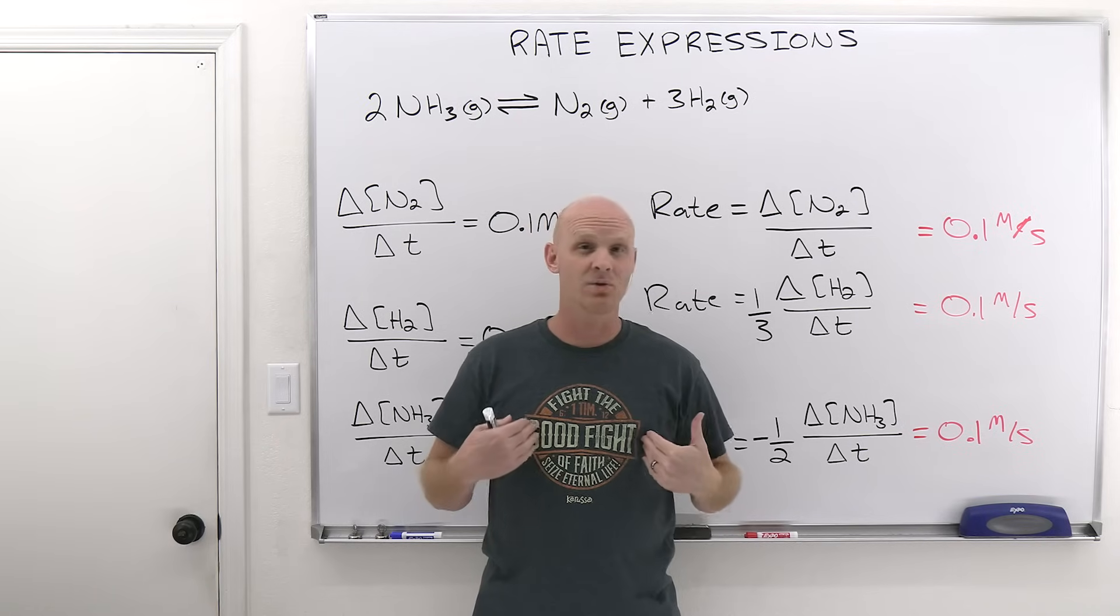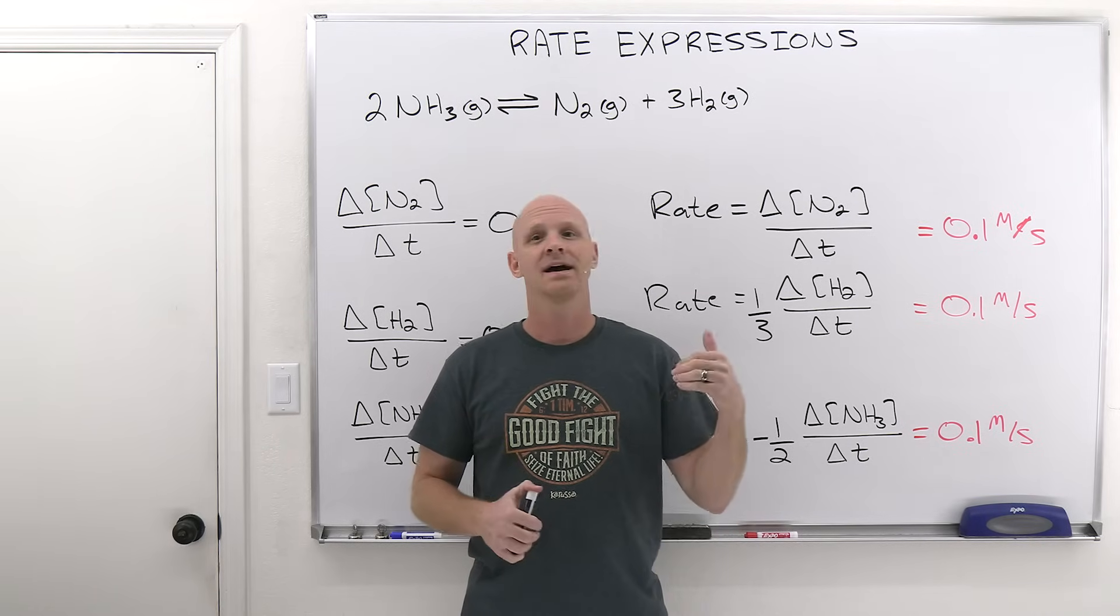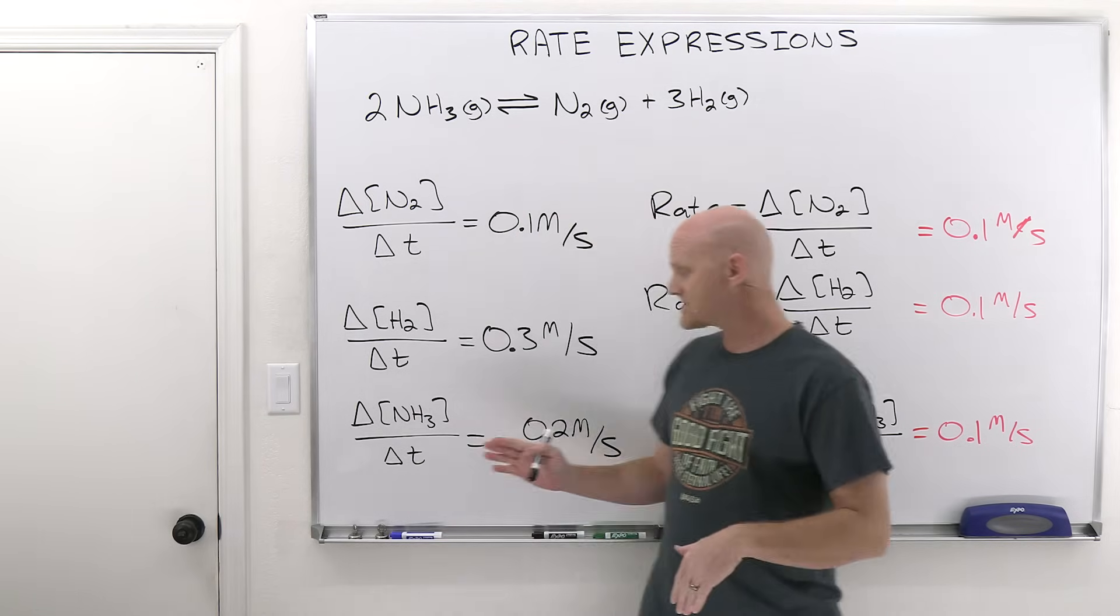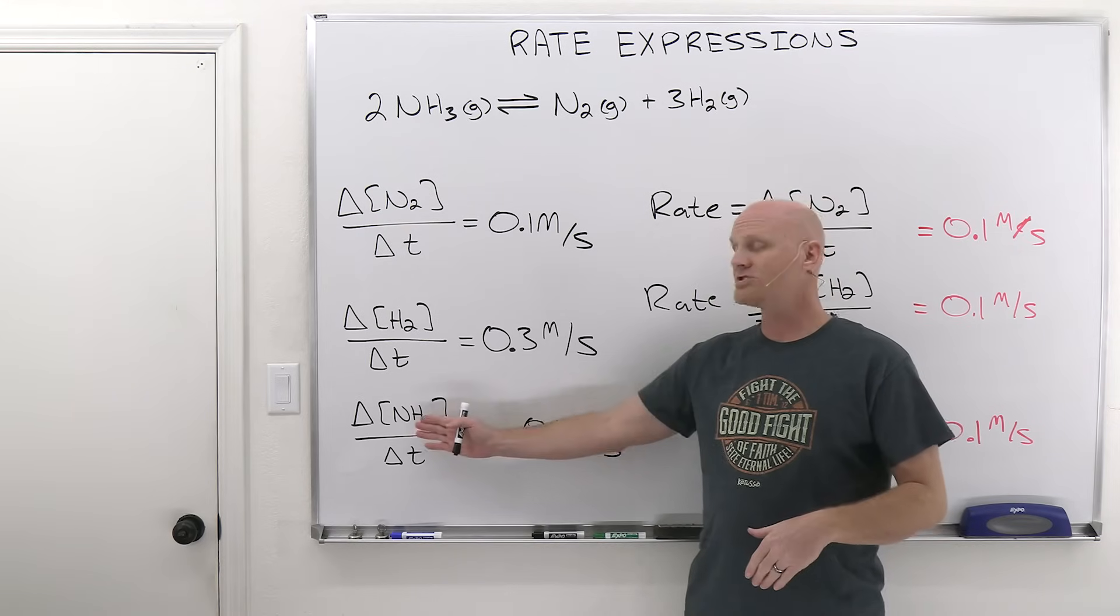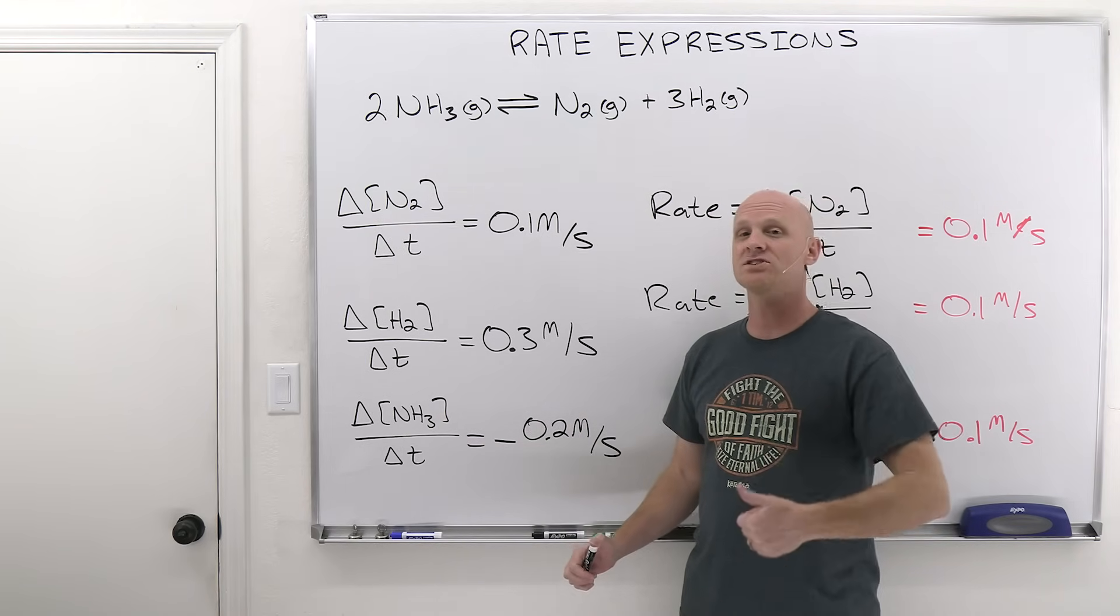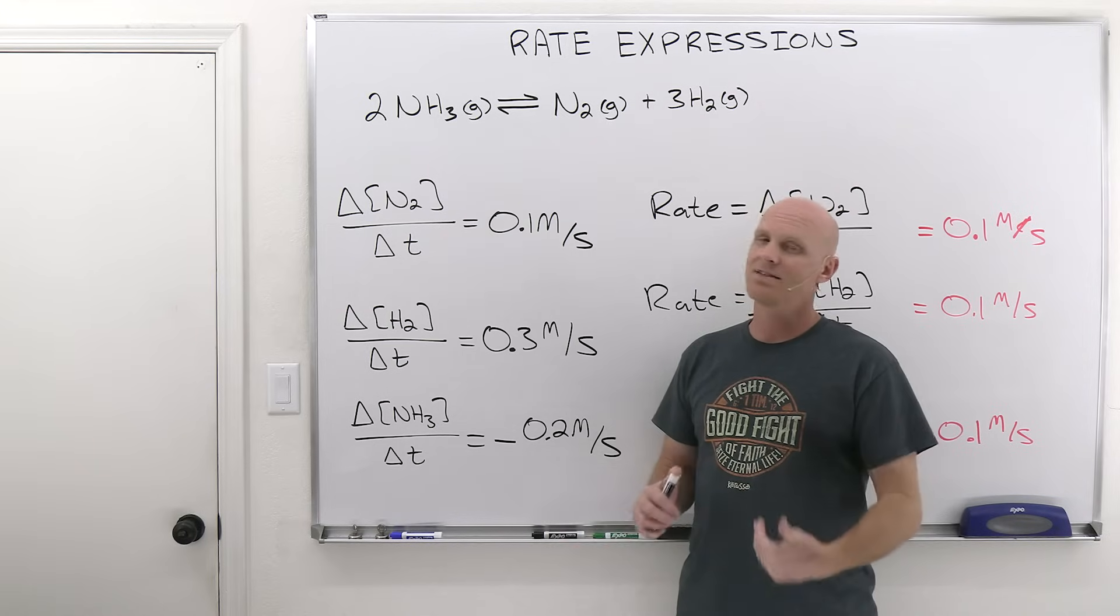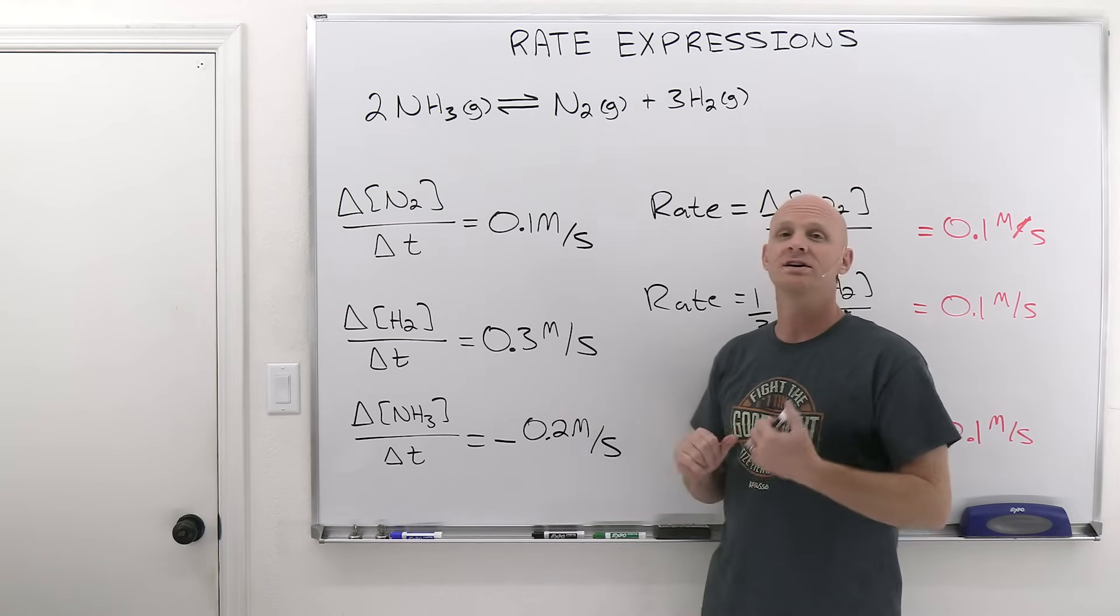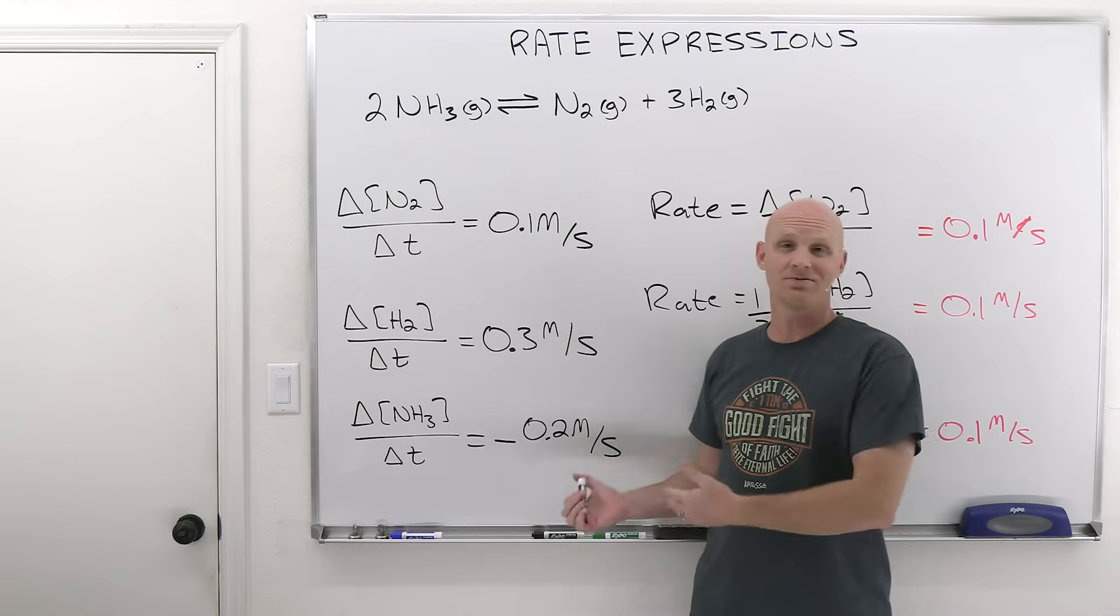That's the same thing going on here. If I say rate of change for a reactant, you better tell me it's negative. But if I say the rate at which it's consumed or the rate at which it's used up, then I already know it's going down. And you're just going to give me the absolute value of just plain old 0.2 molar per second in this case.